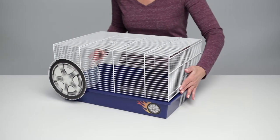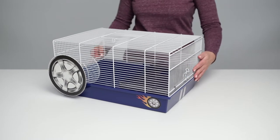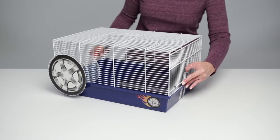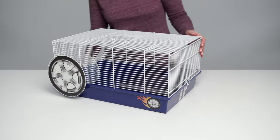Place the wire top on the bottom tray. Secure the top to the bottom using the wire side clips on each end.